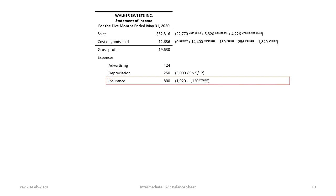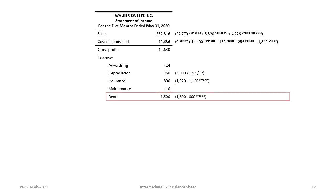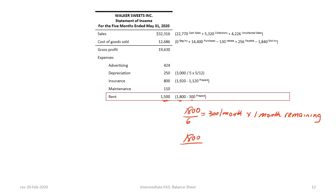Insurance expense is calculated as $1,920 less the prepaid amount of $1,120, resulting in actual insurance expense for the five months of $800. Maintenance of $110 is given, followed by rent of $1,500, calculated as cash paid of $1,800 minus the prepaid amount of $300. The $300 is based on $1,800 for six months — $300 per month with one month remaining. Alternatively, this is $1,800 divided by six months times five months used, giving the same $1,500.